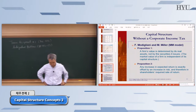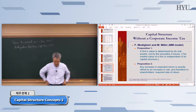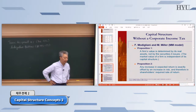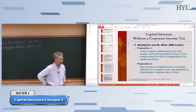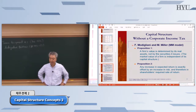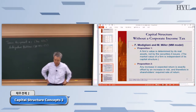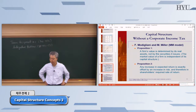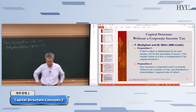Proposition two says if a firm borrows money or increases leverage, then they can increase ROE — return on equity. But the problem is the risk also goes up. So any increase in expected return will be exactly offset by the increase in risk. Therefore, the total value of the firm will not change. That's proposition two.